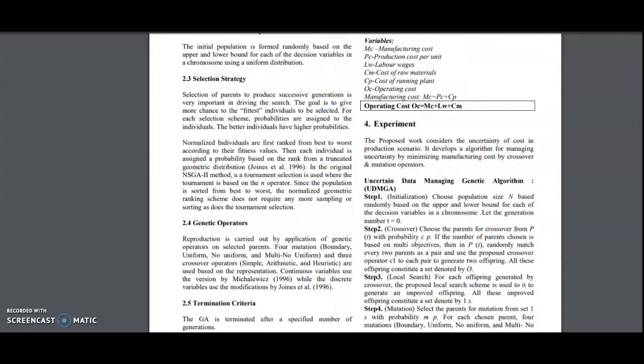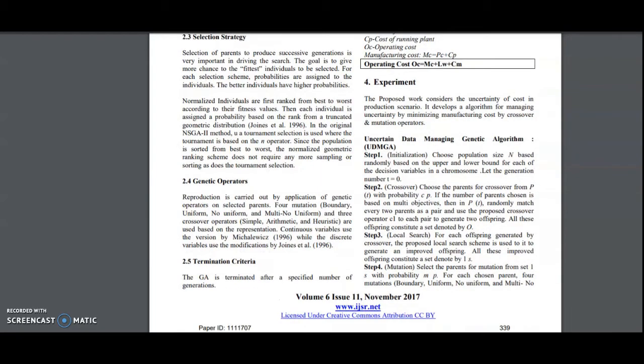We are going to employ genetic operators. Reproduction is carried out by application of genetic operators. Four mutation operators are under study: boundary, uniform, no uniform and multi no uniform. And three crossover operators: simple, arithmetic and heuristics are used based on the representation. Continuous variables are using this and it is referred in the study of literature.